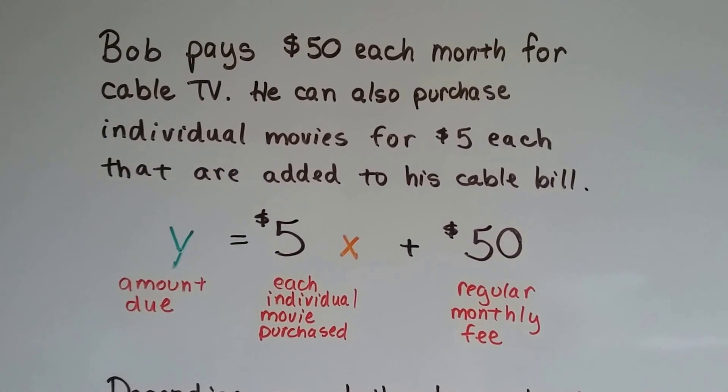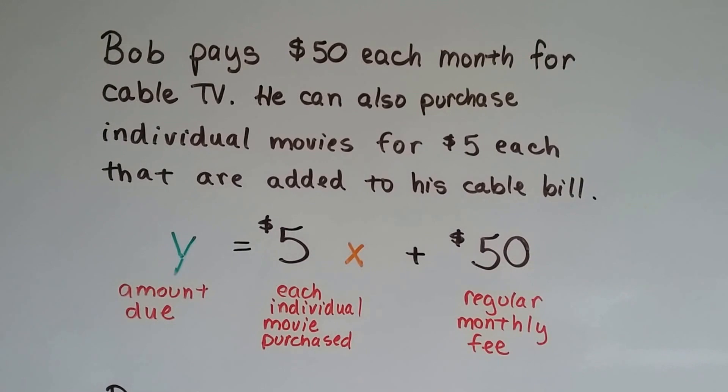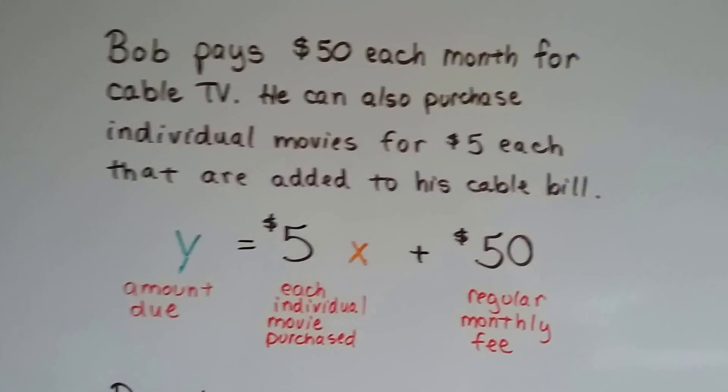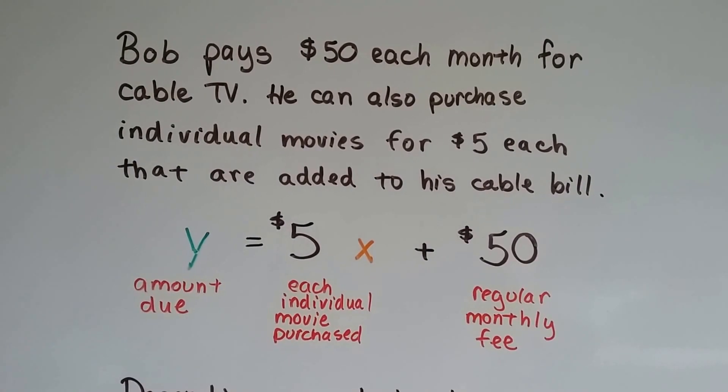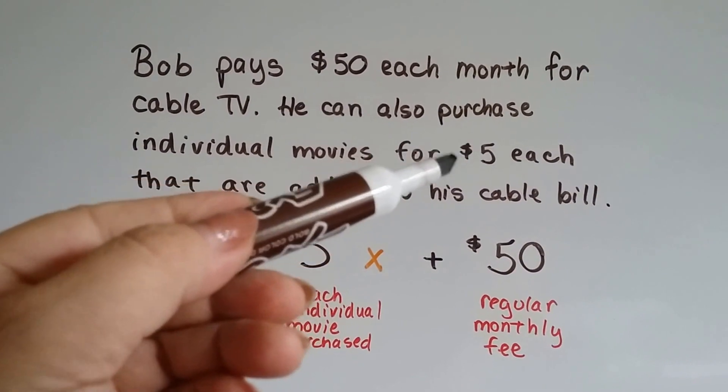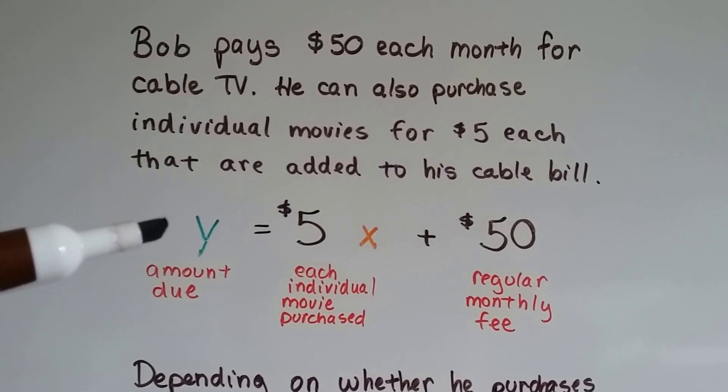Bob pays $50 each month for cable TV. He can also purchase individual movies for $5 each, like new releases, that are added to his cable bill. His parents aren't thrilled about him doing that, and they tell him, don't rent these movies, just wait for them to come out on cable, because that could be expensive. But if he did...